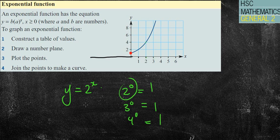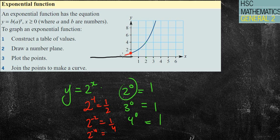But what happens if I put a negative number in? For example, 2 to the negative 1 comes out as one half, and 2 to the negative 2 comes out as one quarter. What happens is it never becomes a negative y value — it just gets closer and closer to the x-axis but doesn't actually cut it. We call that in mathematics an asymptote. All you need to know is that it goes through 1 and gets really close to the x-axis but never quite gets there.